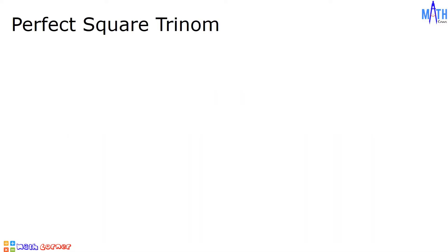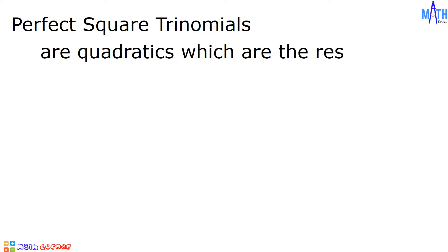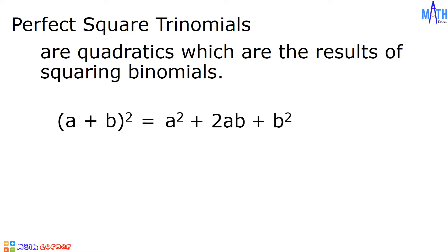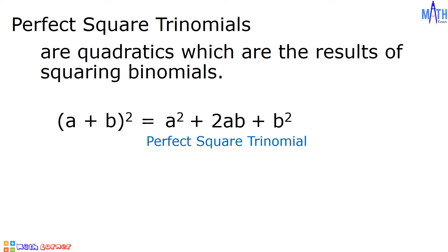Perfect square trinomials are quadratics which are the results of squaring binomials. Let us consider the square of a plus b. It is equal to a squared plus 2ab plus b squared. This is a perfect square trinomial, and the square of a plus b is the factored form.